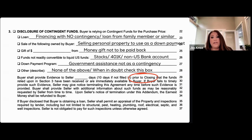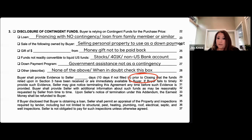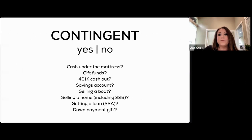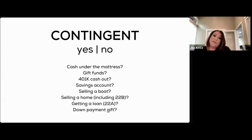If the buyer cannot provide proof of the funds needed to close, there is a clause in the 22EF that allows the seller to terminate and move toward another qualified buyer. Let's review the definitions of contingent and non-contingent as we think about writing up an offer.